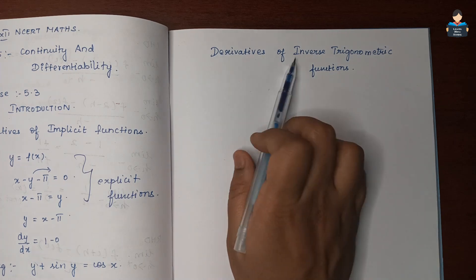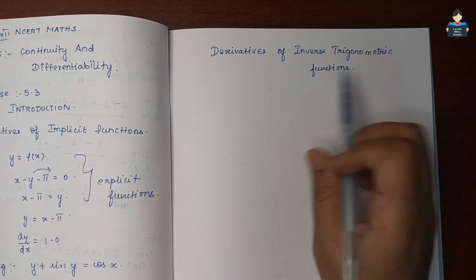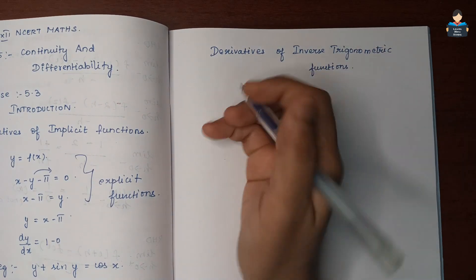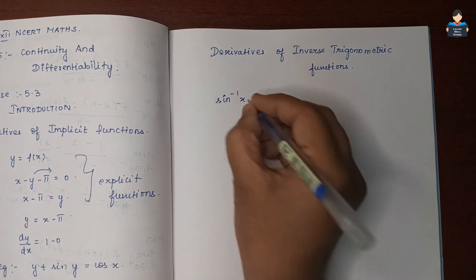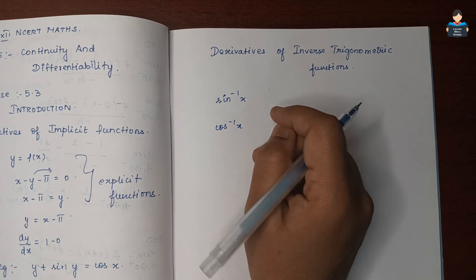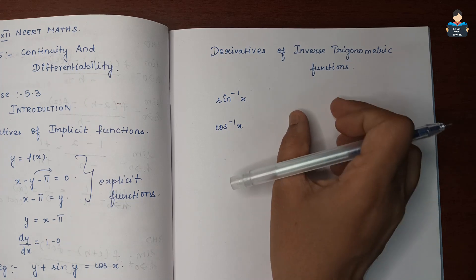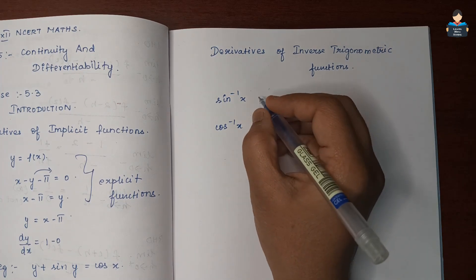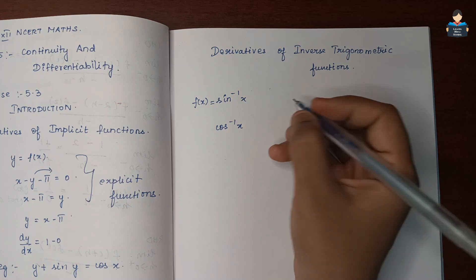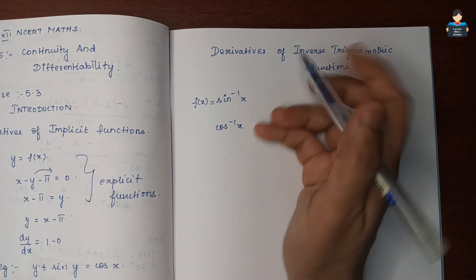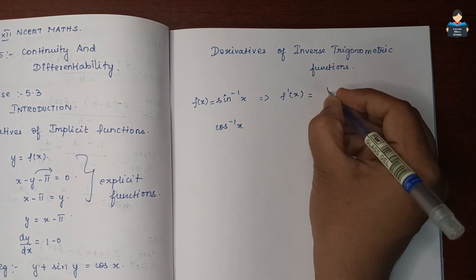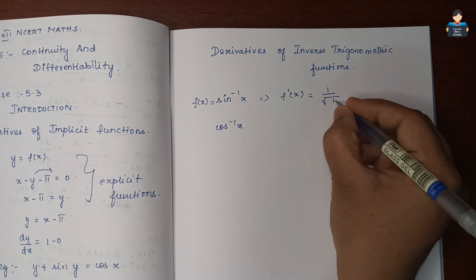Next, derivatives of inverse trigonometric functions. So now, inverse trigonometric functions: sin inverse of x, cos inverse of x, tan inverse, secant inverse, cosec inverse. So f(x) = sin⁻¹x, then f'(x) = 1 / √(1 - x²).